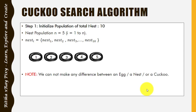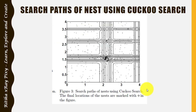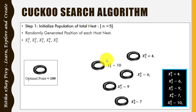Initialize the population of host nests — that is five, as in the research paper 'Cuckoo Search via Lévy Flights.' You can see the final location of the nests and the search path using cuckoo search. This example is based on the algorithm given in that research paper. Note that there are other research papers online with slightly different algorithms.